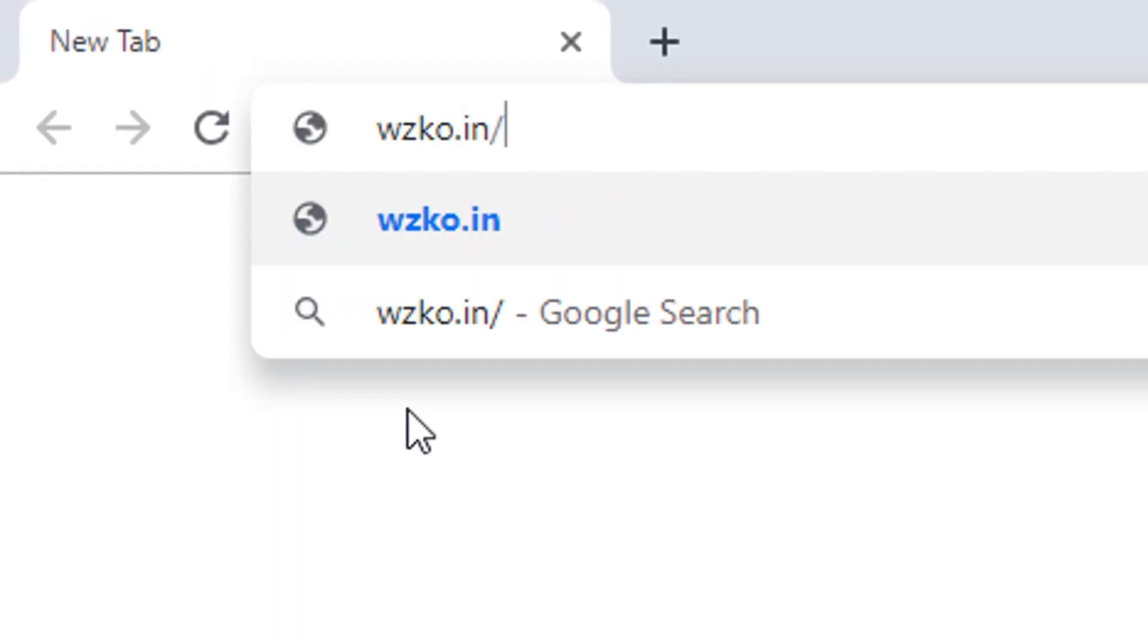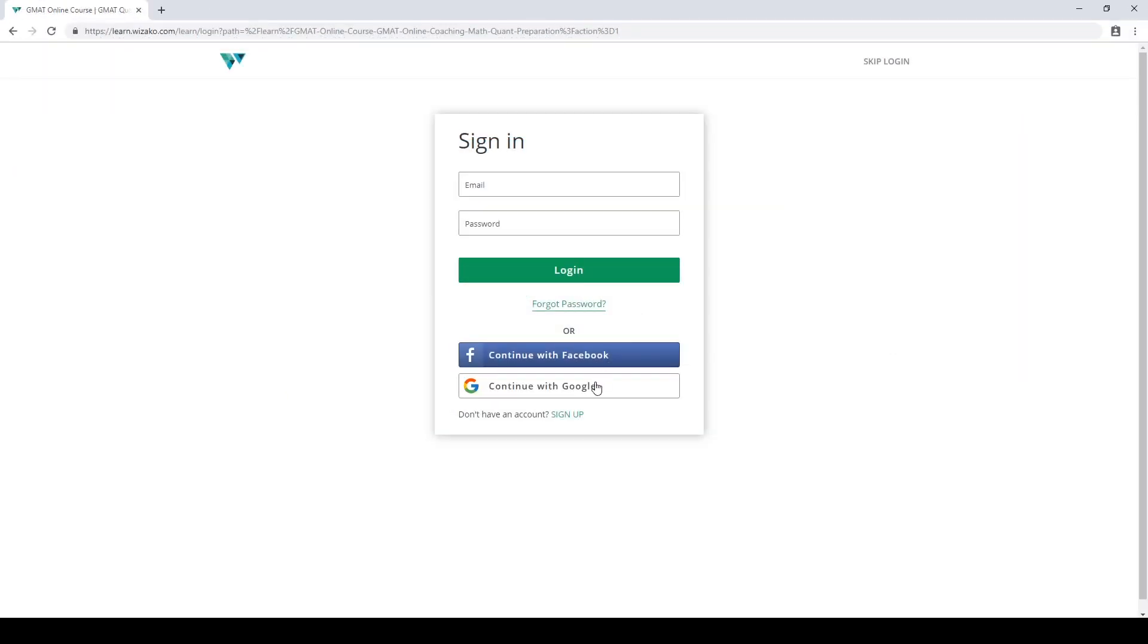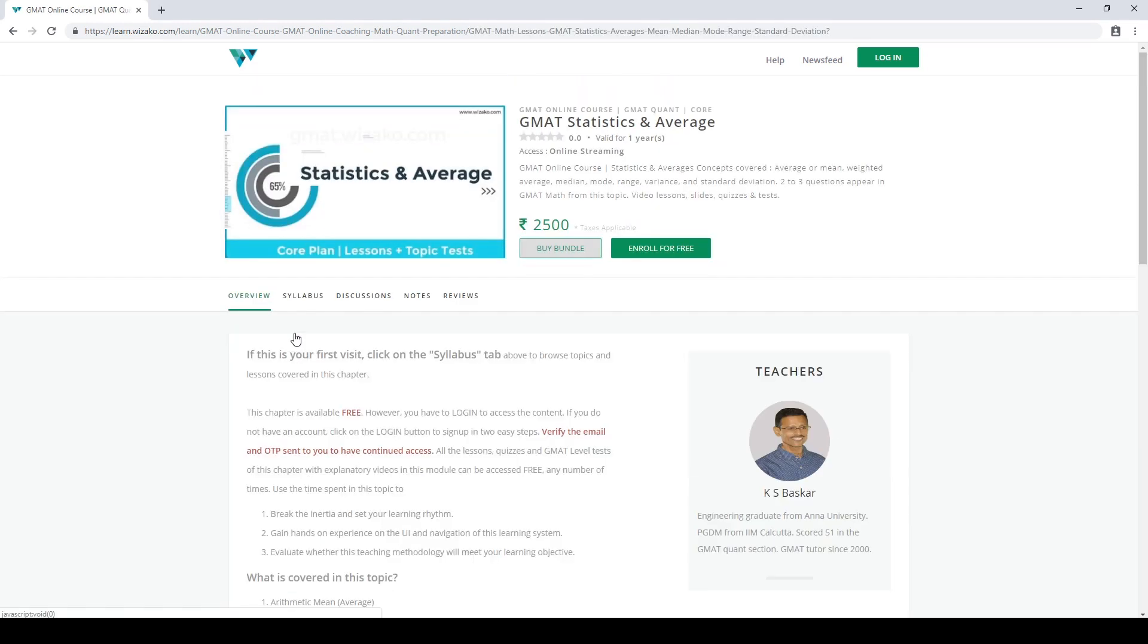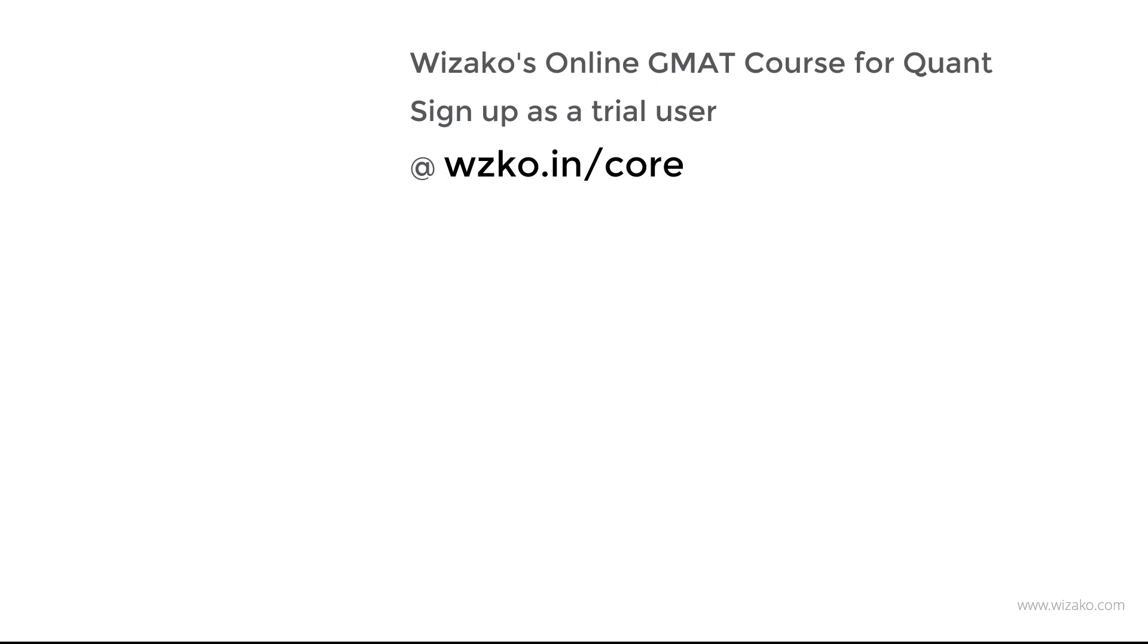Choice B is the correct answer to the question. Before you leave, do three things. One, sign up as a trial user for GMAT online course, Wizako's GMAT online course at wzko.in/core. Get started with statistics on average, get momentum to your GMAT preparation. Pay and convert to a paid user to get access to the remaining topics.